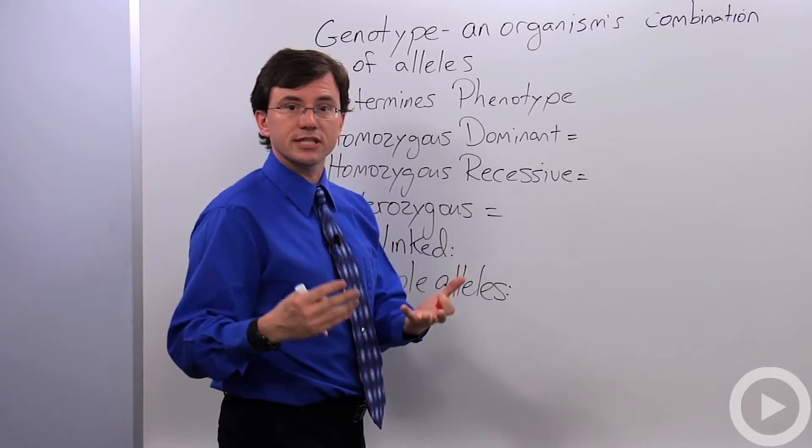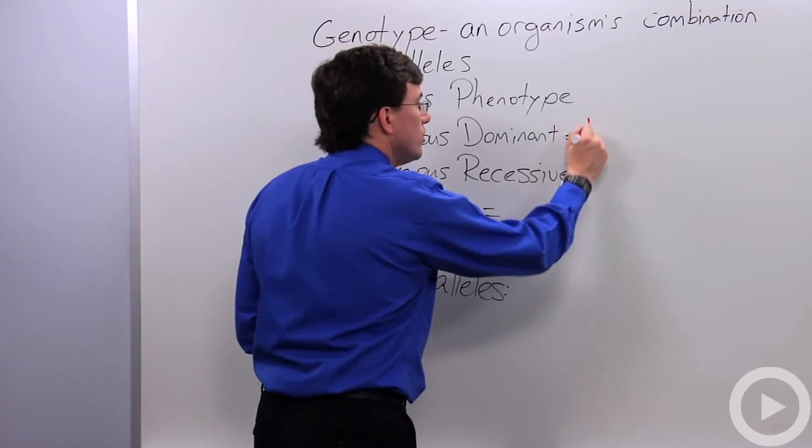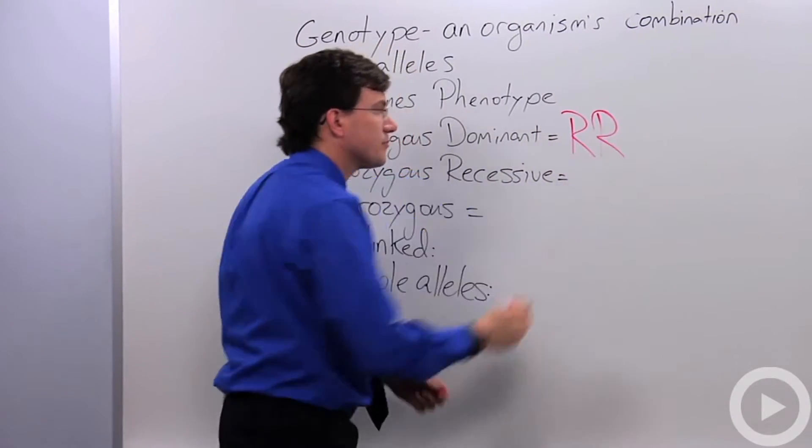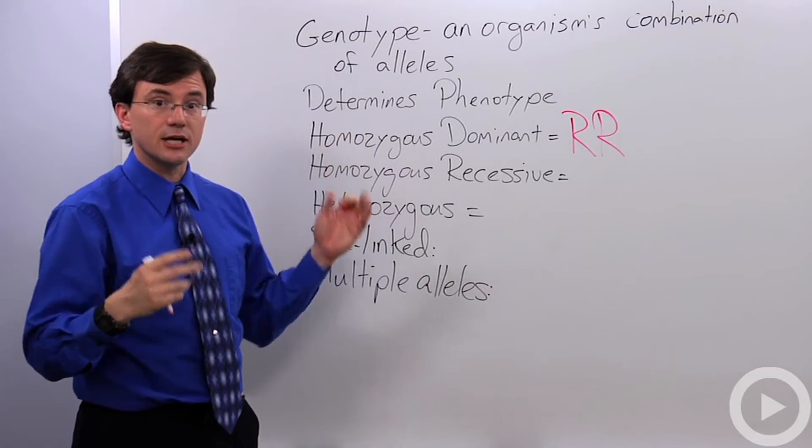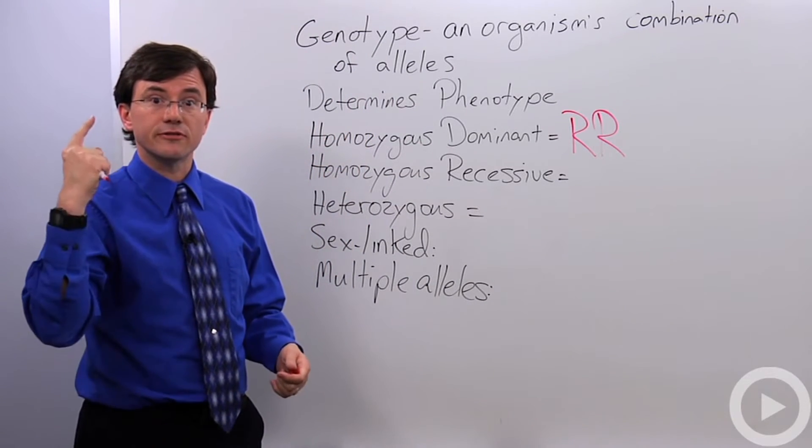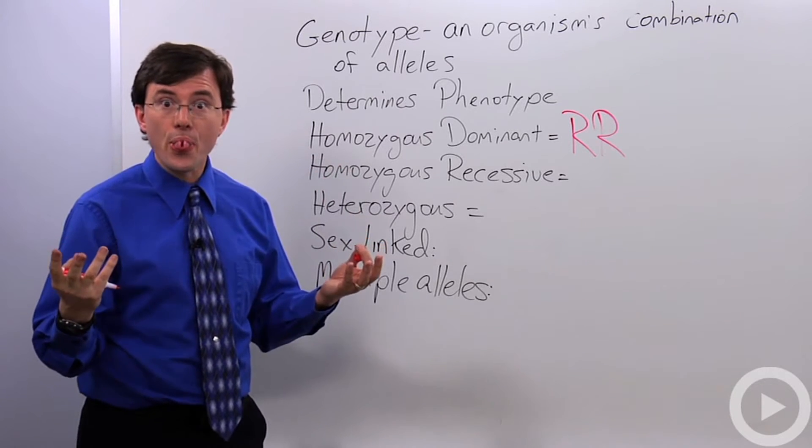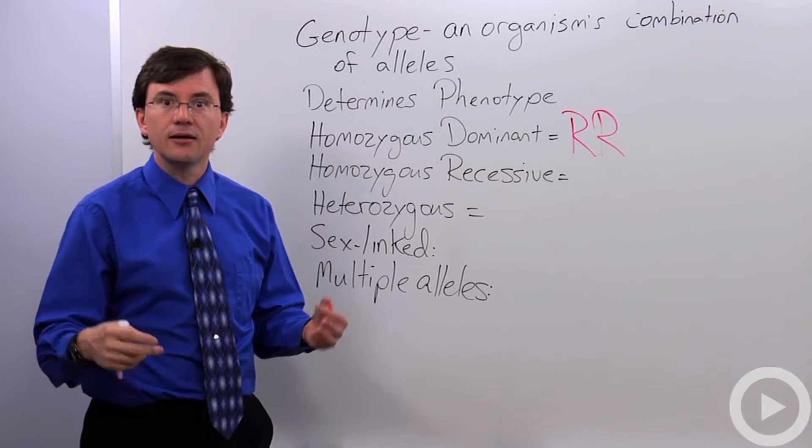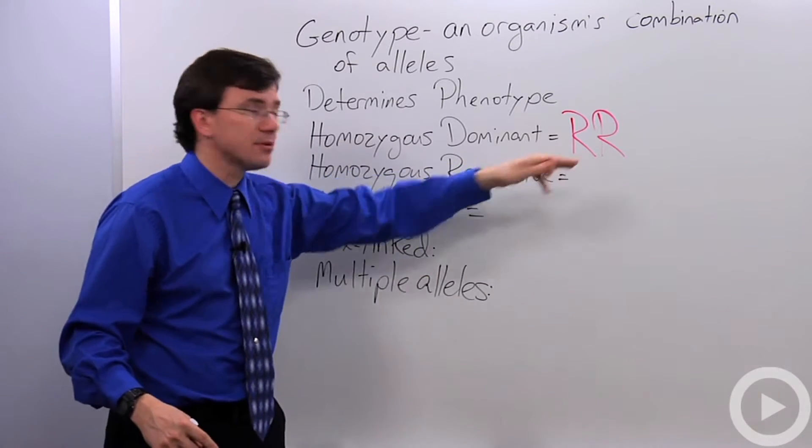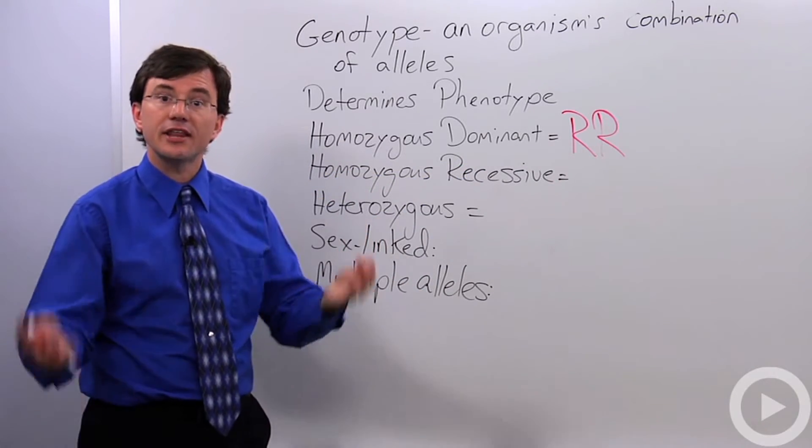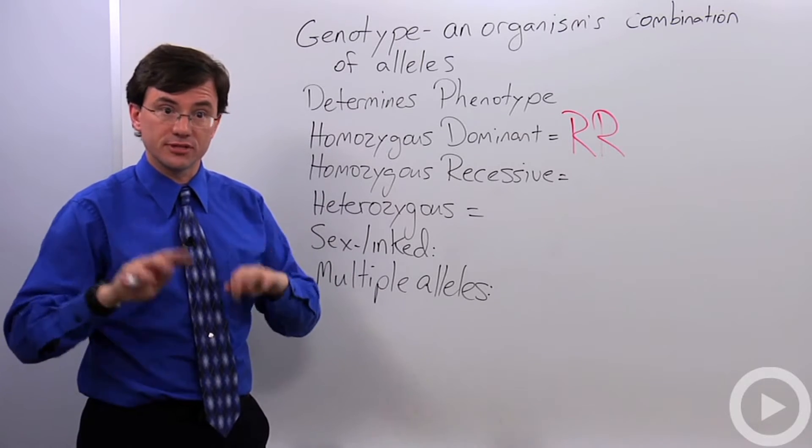So if we use big R, say for example the tongue-rolling allele, we would write big R, big R. Remember with genotypes, when you're writing them out, you use the first letter of the dominant trait, like a roller versus a non-roller, you'd use the letter R. And you use the capital letter for the dominant version and the lowercase version for the recessive.